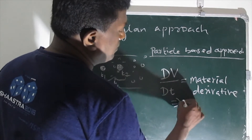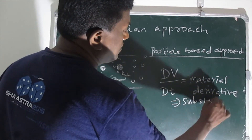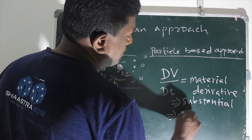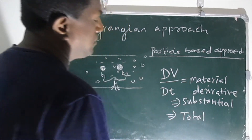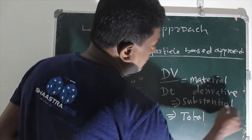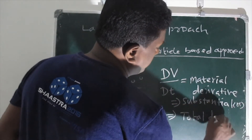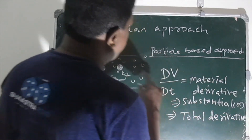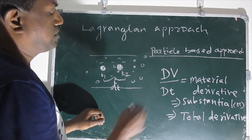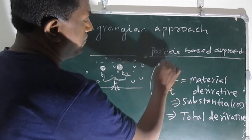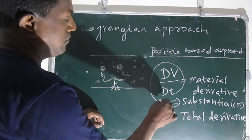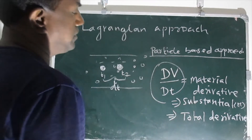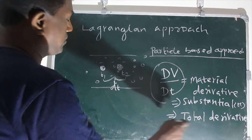This dv/dt is also called the substantial derivative, and also the total derivative. So in the Lagrangian approach, the differential equations we derive — dv/dt — can be referred to as the material derivative, substantial derivative, or total derivative.